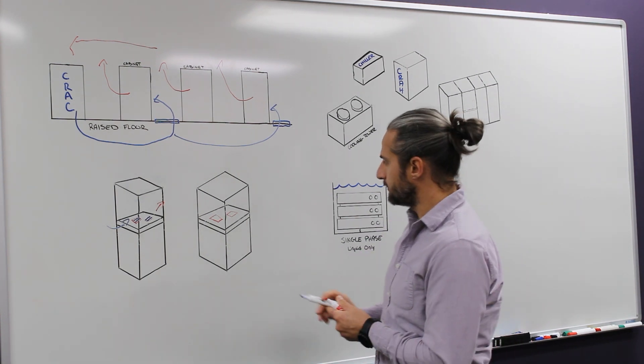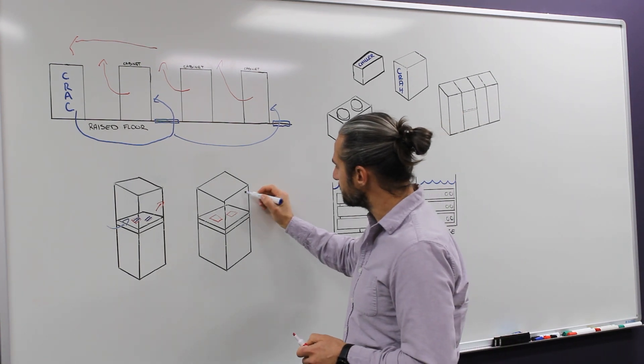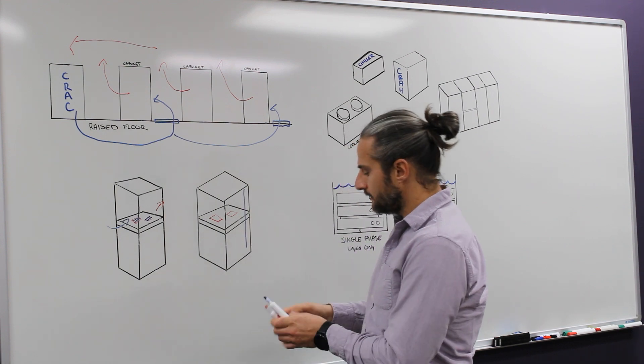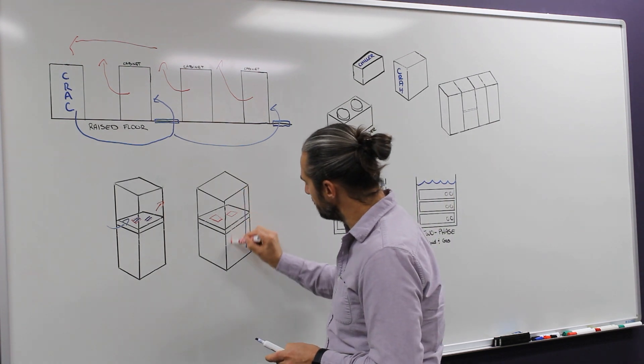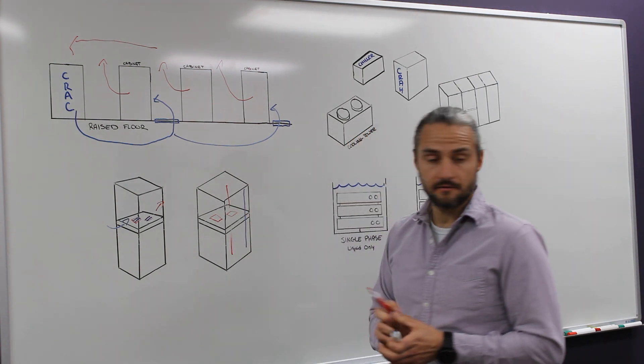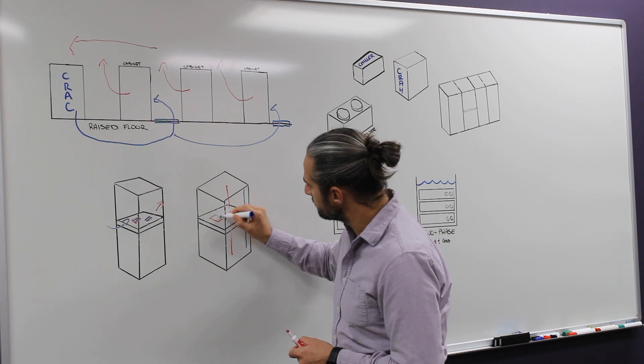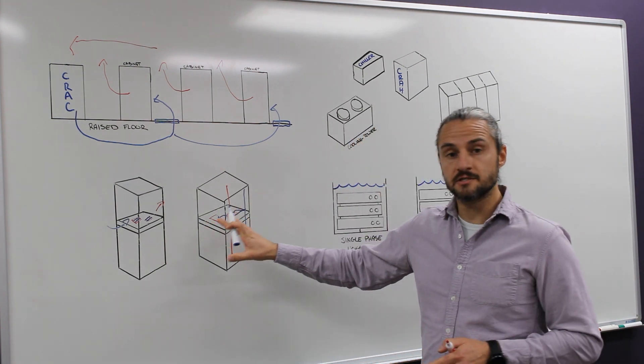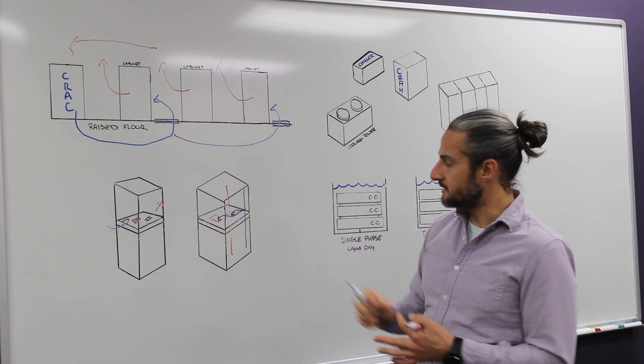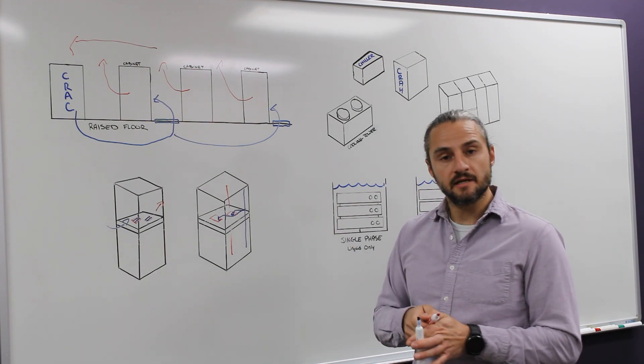If you have a liquid cooling opportunity here, you'll often have manifolds, a hot one and a cold one, located in the back of the rack that are distributing liquid to the individual components. The liquid flows across a cold plate, in this case not a heat sink,